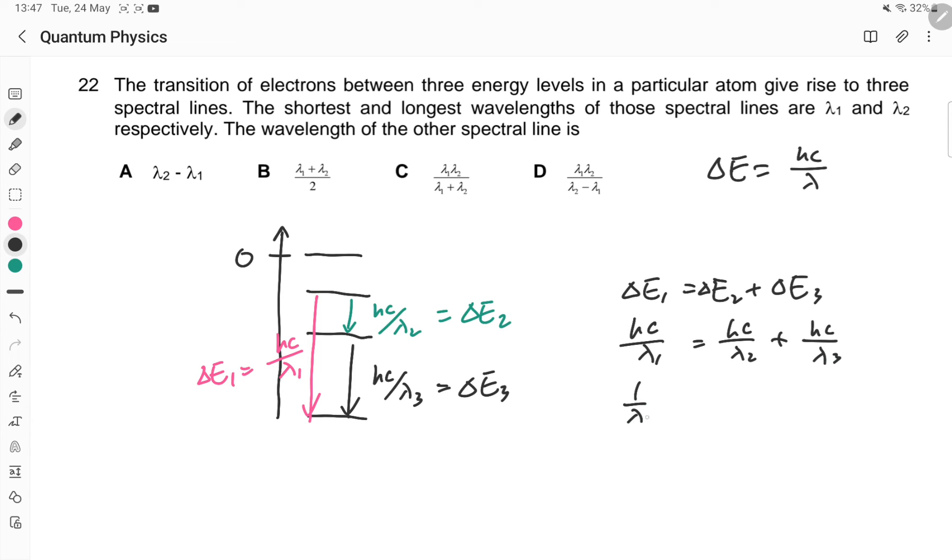1/λ₃ = 1/λ₁ - 1/λ₂. Combine the two fractions on the right hand side, you have (λ₂ - λ₁)/(λ₁λ₂). So finally flip over, that gives you λ₁λ₂ divided by the difference, and answer is D.